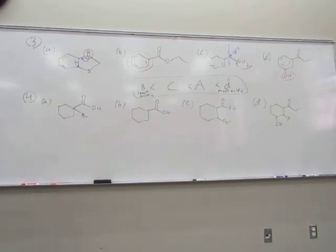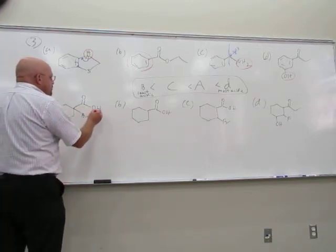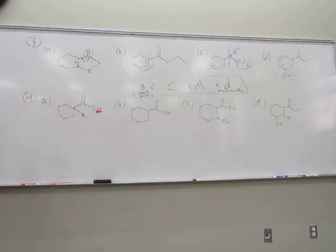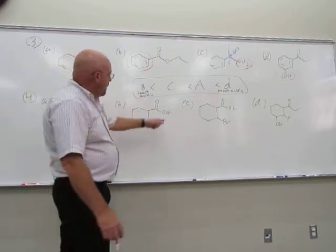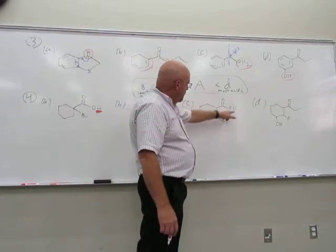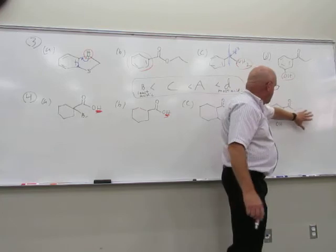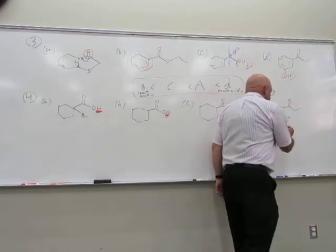Let's take a look at the next problem. Again, you want to look at each molecule individually, highlight your most acidic hydrogen, and then start comparing. We've got hydrogens on carbon and a hydrogen on oxygen — you're more acidic on the oxygen. That's our most acidic hydrogen. This pattern repeats for all four molecules — hydrogens on carbon and a hydrogen on oxygen each time, so oxygen is the most acidic in each case.